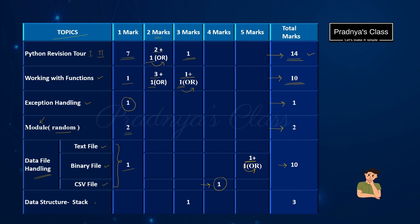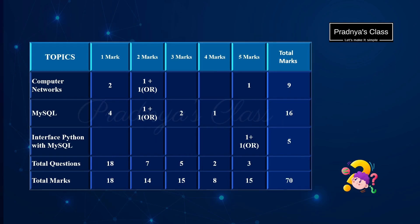Look at the next topic that is Data Structure, stack using list. You will be getting one question for three marks based on this topic. So the total weightage is three marks. Let's proceed to the remaining topics.